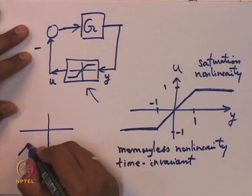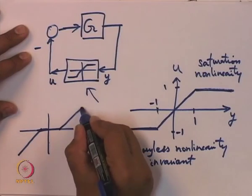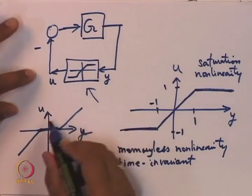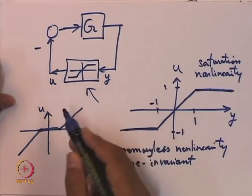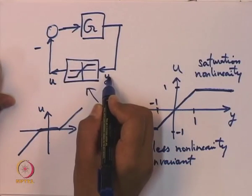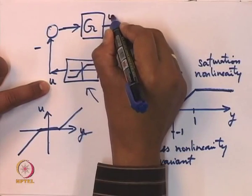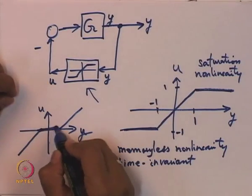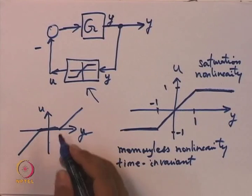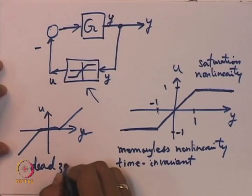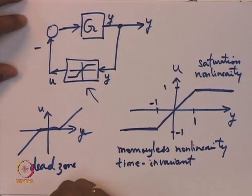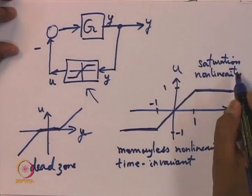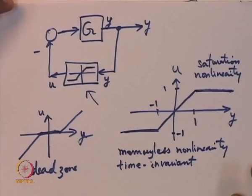Many of the commonly encountered nonlinearities are memoryless and time invariant. Another example is the dead zone. Because we have this nonlinearity in the feedback path, we prefer calling the input to this nonlinearity as y and the output as u, so that the output of the original system continues to be y. This is another example of a memoryless time invariant nonlinearity, called dead zone. It can also be understood as play in the system.